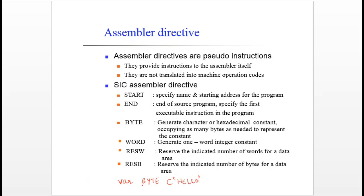Similarly, if you want to define a hexadecimal constant, the syntax is: variable name, BYTE, followed by X, and within single quotation marks you specify the hexadecimal value. For WORD, it can be used to generate a one-word integer constant. One word in SIC means three consecutive bytes, so all integers occupy three bytes. If you need to define any integer constants, the assembler directive to use is WORD.